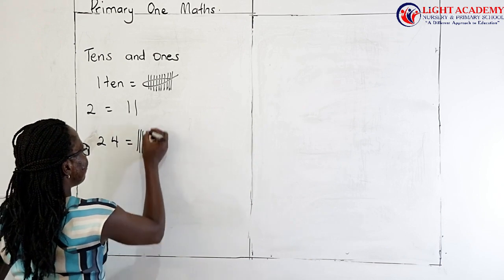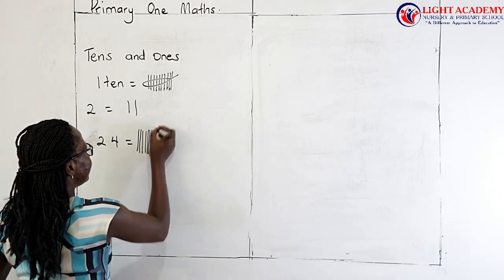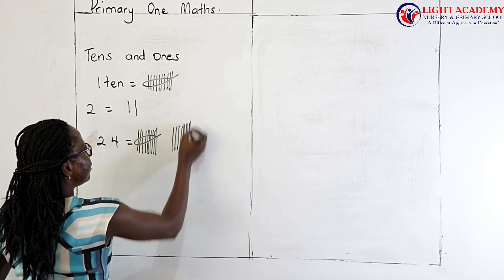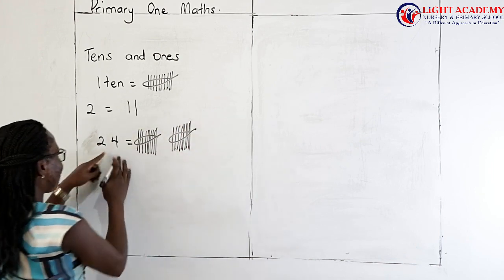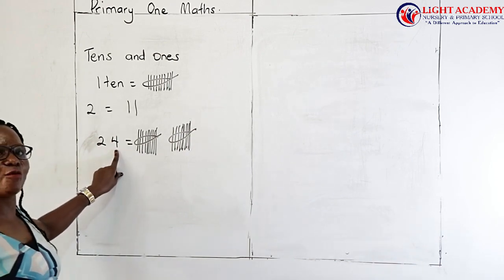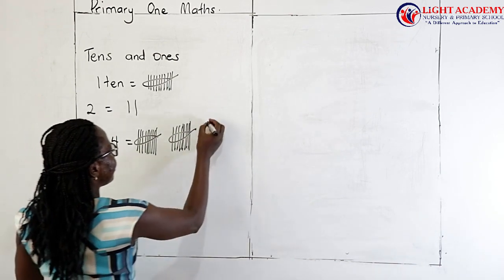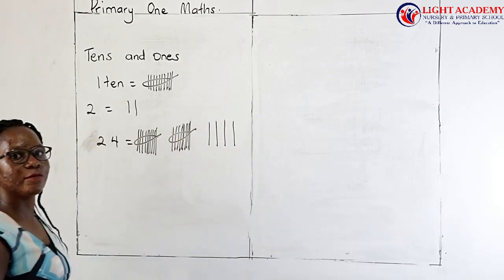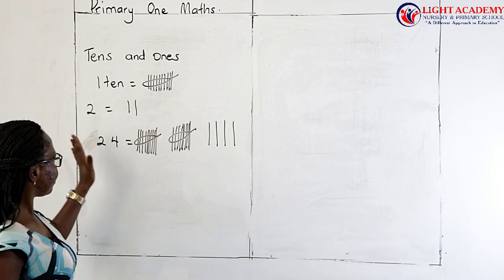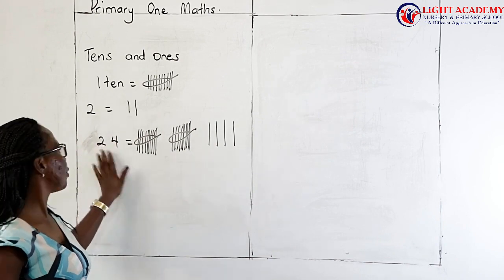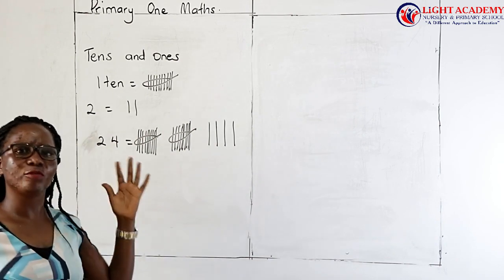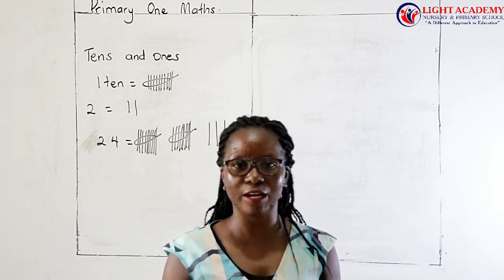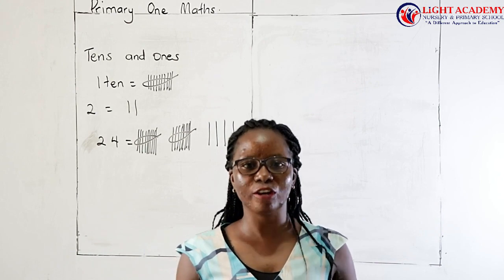We looked at examples like 24 — drawing bangles and sticks of 24. When we talk of 24, we are going to draw, first of all, the bangles of 20. So those are two bangles — counting to ten, you tie; counting to ten again, you tie. So the four here is in the place value of ones, so automatically we draw four sticks.